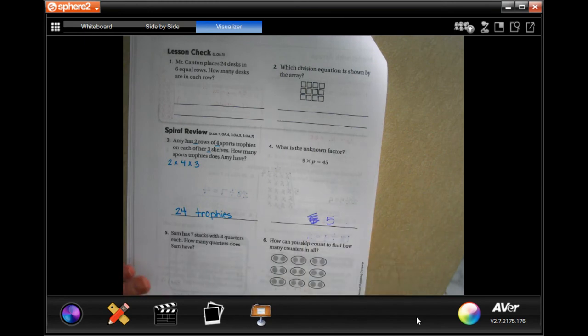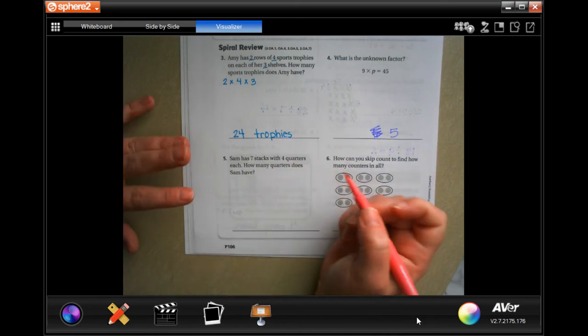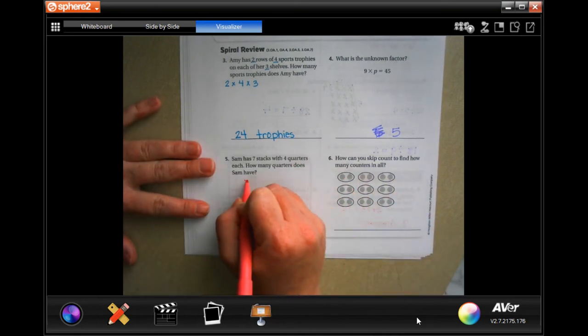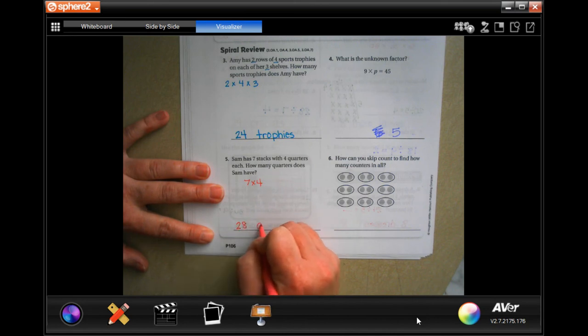Okay, Sam has seven coins with four quarters in each. How many quarters does Sam have? So seven times four is 28 quarters.